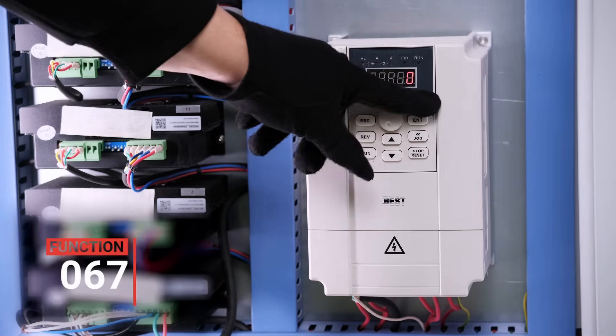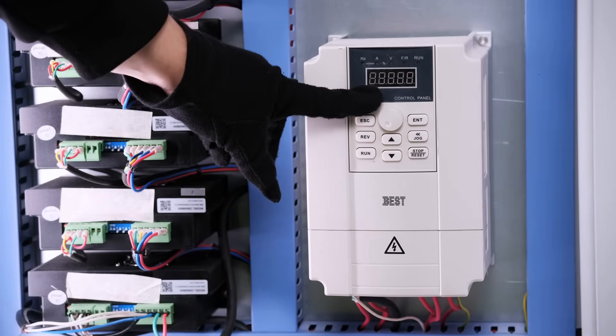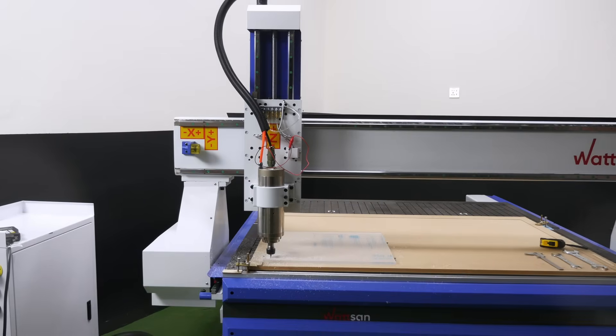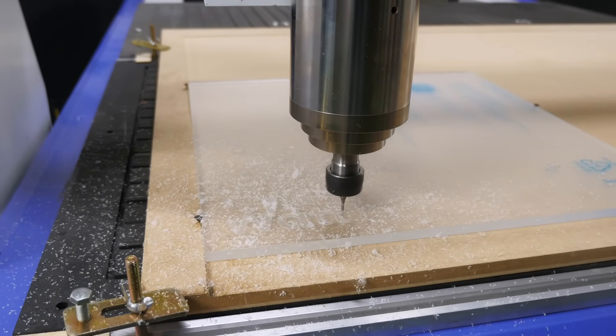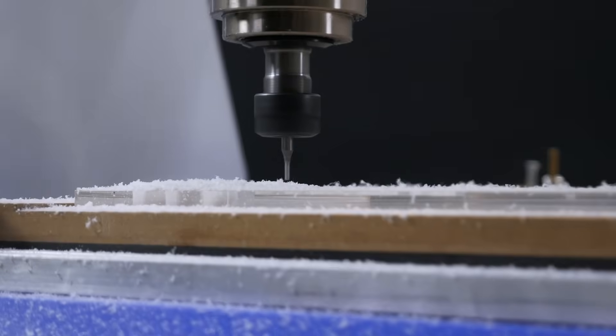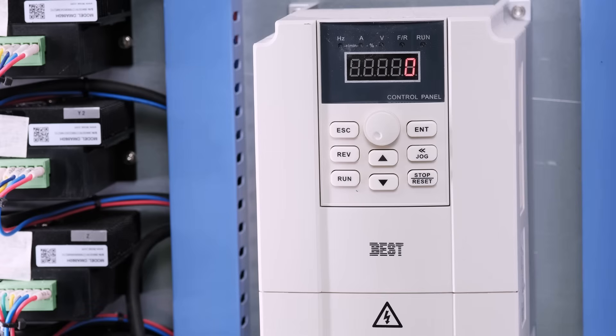Function 67. The parameter is responsible for reverse control, meaning the spindle's counterclockwise rotation. You will need to refer to your converter manual because the value can be varied between models. However, in most of our machines,